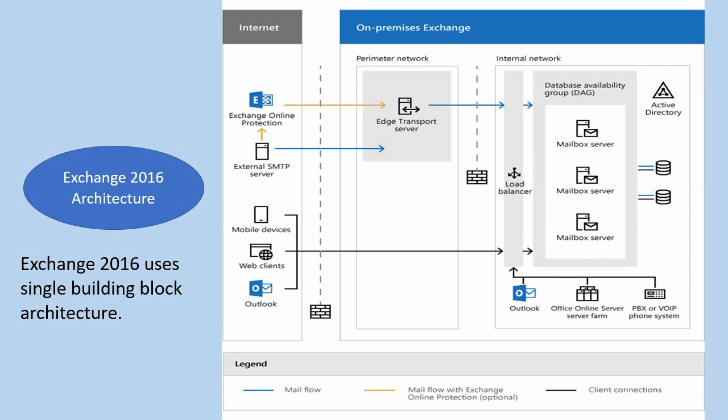Exchange Online Protection, which is also known as EOP, is providing additional mail filtering and protection service over and above the edge server. Using EOP along with the edge server is optional.